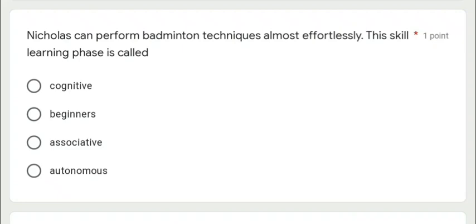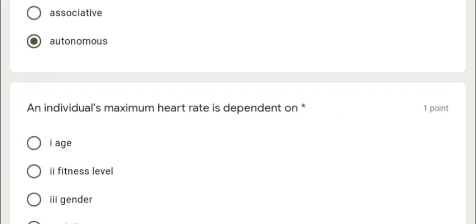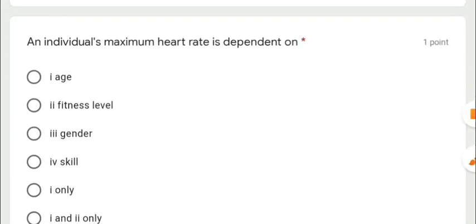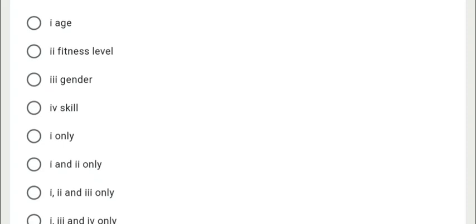An individual's maximum heart rate is dependent on the person's age, fitness level, gender, or skill. Would you consider all of them or would you consider some? Okay, the answer is one, two, and three. You must consider the age, the fitness level, and their gender.